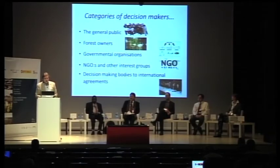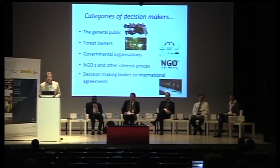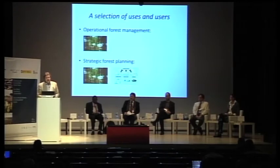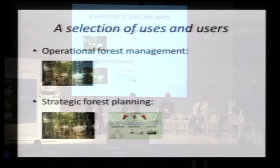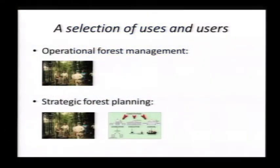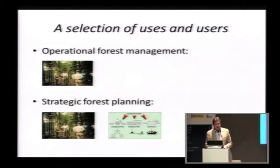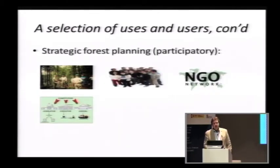Very briefly on categories of decision makers — this will be covered in more depth by the next keynote speaker. Looking broadly, we have the general public, forest owners, governmental organizations, NGOs, and decision-making bodies for international agreements. Looking at selection of uses and users, operational forest management is a matter for forest owners, as is strategic forest planning, though also to some extent governmental organizations. For strategic planning done in a participatory manner, like the idea around model forests, many other stakeholders are involved.